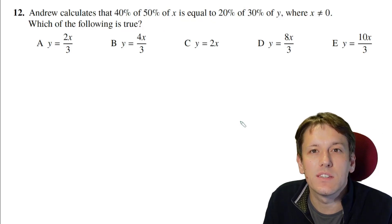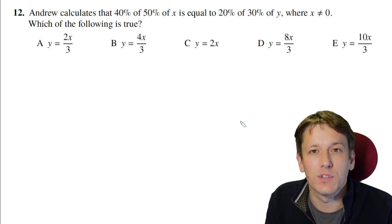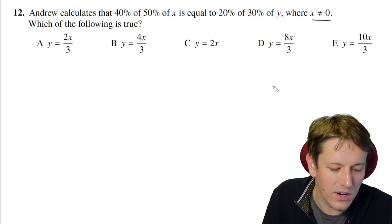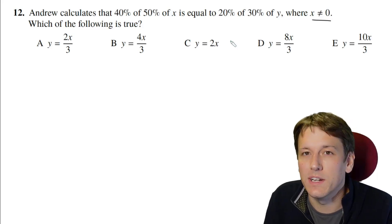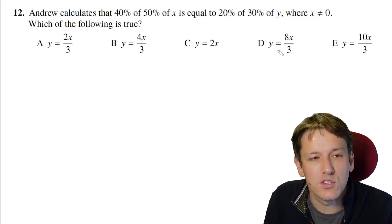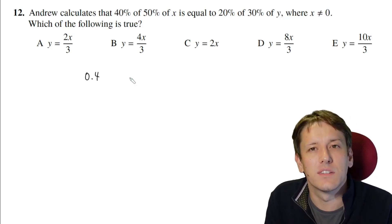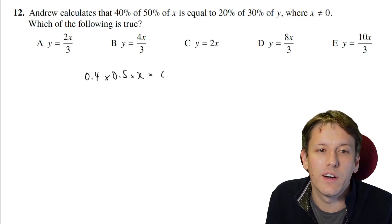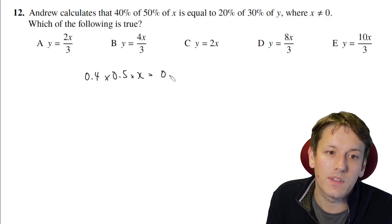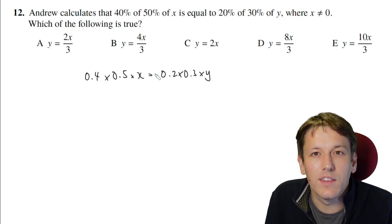Andrew calculates that 40% of 50% of x is equal to 20% of 30% of y, where x is not equal to 0, and then we want to know which of the following is true. Firstly, let's just notice that it says x is not equal to 0 here, because if x were 0 and y were also 0, then this would be satisfied and all these answers would be true. So we're looking for a non-trivial or non-zero solution here. So 40% of something is 0.4 times that thing, and 50% of something is 0.5 times that thing. So I've got 0.4 times 0.5 times x here, that's going to be equal to 20% of 30% of y, that's 0.2 times 0.3 times y.